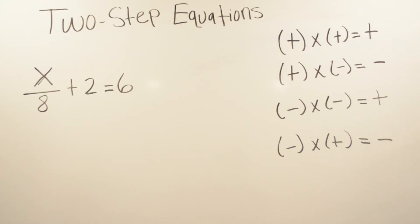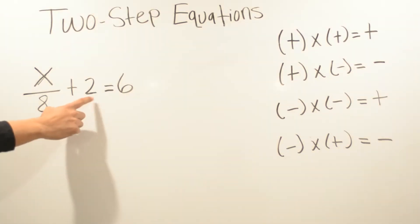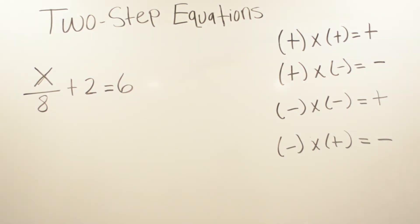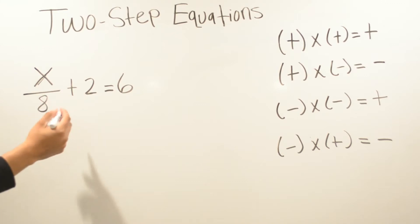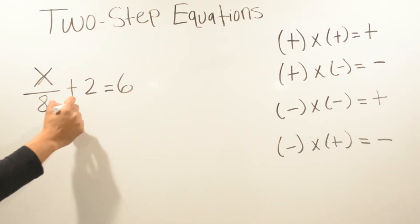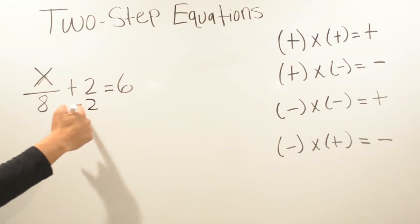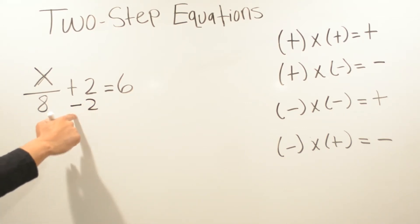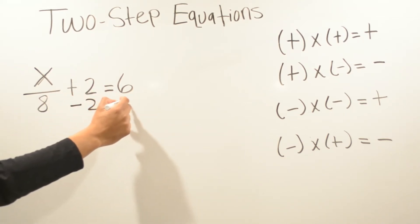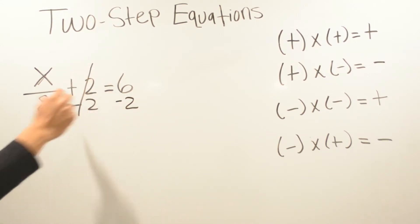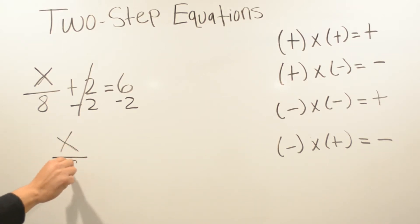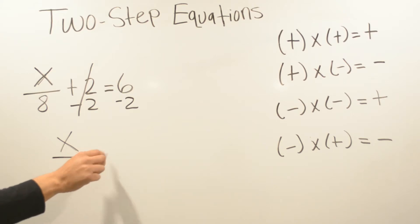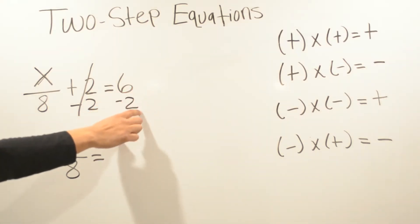Now this problem: we have x divided by eight plus two equals six. The first thing we have to do is get rid of the positive two — we're going to do the opposite, which is negative two. Whatever we do on one side of the equal sign, we have to do it on the other side. So the positive two and negative two cancel, and we're going to be left only with x over eight equals — now we have a positive and a negative.